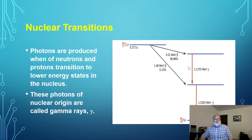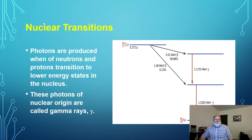These gamma rays have very specific energies, as you can see on this chart. They don't have a wide range of all possible energies — whatever the transition is, that's the energy of the photon.